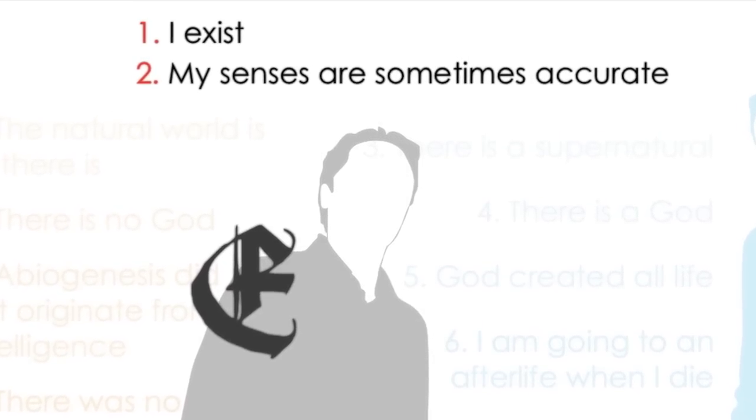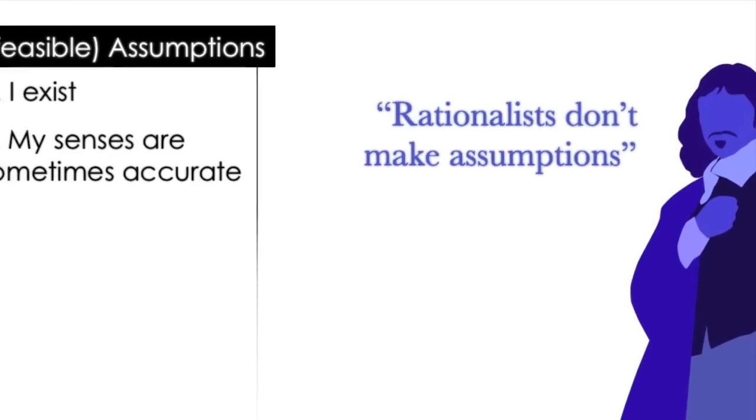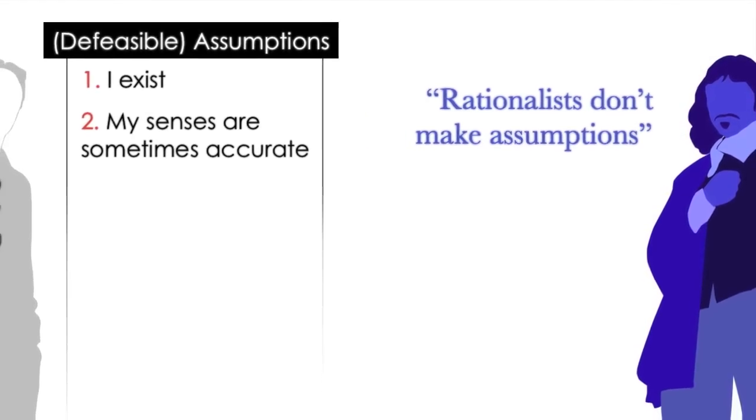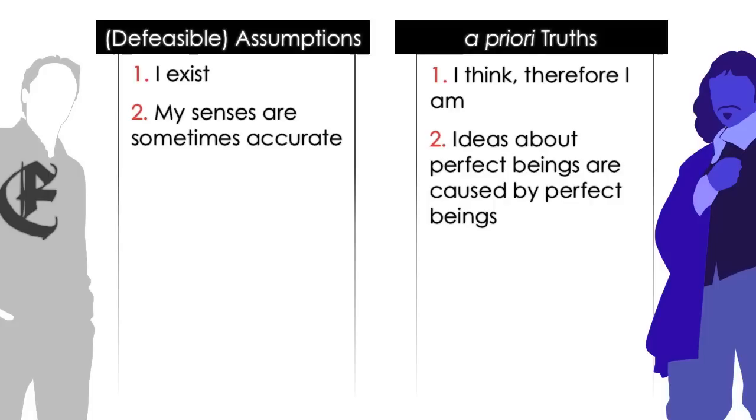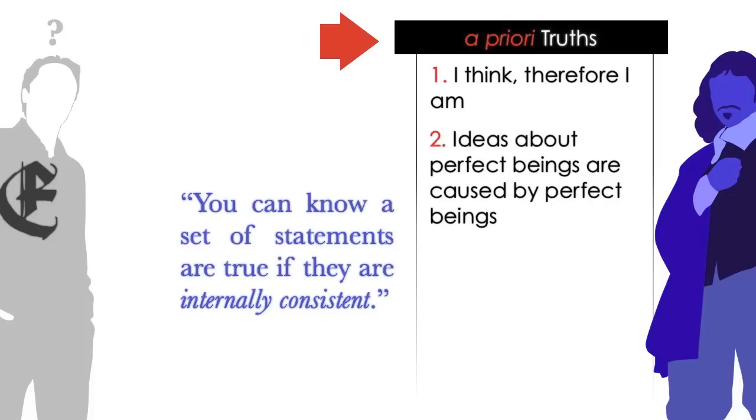Another criticism was that while I make assumptions, rationalists like Descartes don't make assumptions. Rationalists are just observing a priori truths. To which my response is, how can you know a priori whether something is a truth?